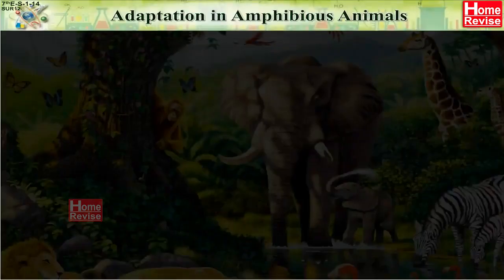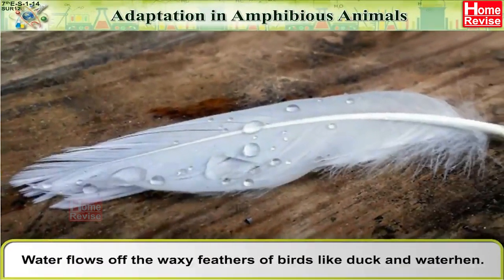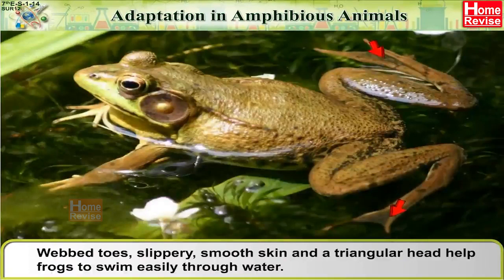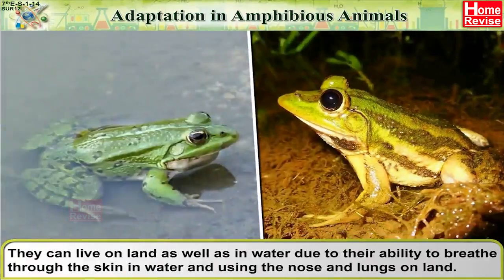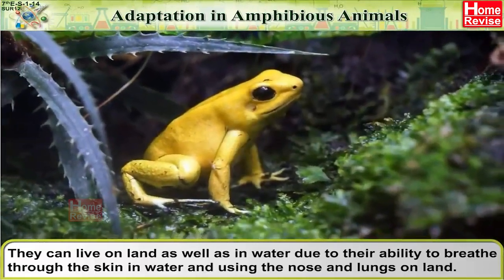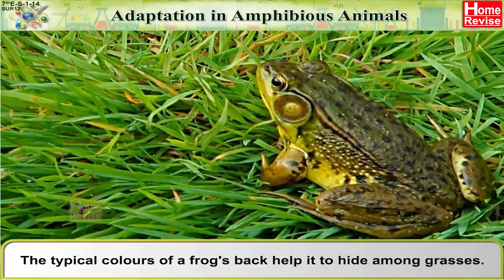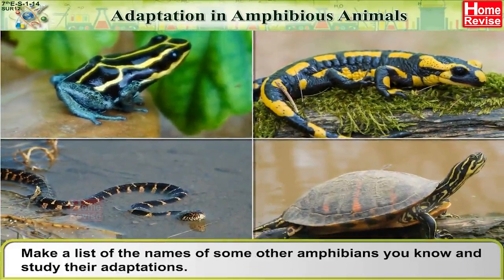Adaptation in amphibian animals: As the frog and duck have webbed toes, they can use their legs like oars. Water flows off the waxy feathers of birds like duck and water hen. Webbed toes, slippery smooth skin, and a triangular head help frogs to swim easily through water. They can live on land as well as in water due to their ability to breathe through the skin in water, and using the nose and lungs on land. The typical colours on a frog's back help it to hide among grasses.